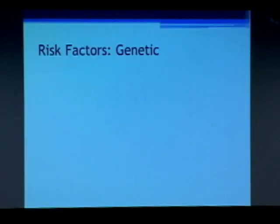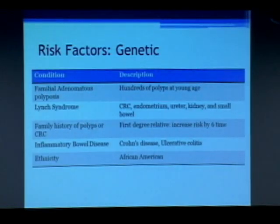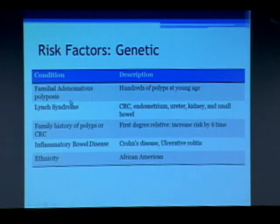So what are some of the risk factors for colorectal cancer? Like everything else, it has to do with nature and nurture. Some of the most common factors are genetic. Familial adenomatous polyposis is a condition where people get hundreds of polyps in the colon, starting at a very young age like the teenage years, and virtually 100% of them will have colon cancer unless treated by removing the colon.